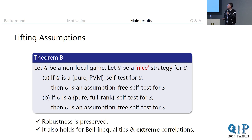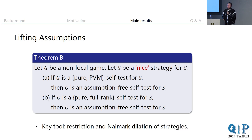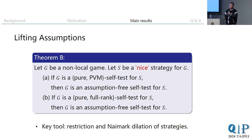Our result also holds for self-tests from Bell inequalities and extreme correlations — for example, from the CHSH correlation — though for correlations it is required that the correlation itself be extreme. For the proof, we rely heavily on the restriction and Naimark dilation of strategies, which are canonical ways to obtain full-rank and projective strategies respectively. These tools we believe could be of independent interest beyond the regime of self-testing.